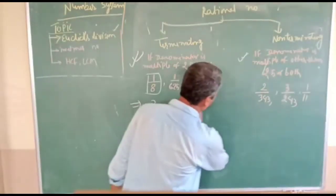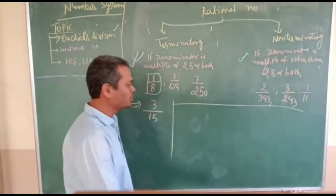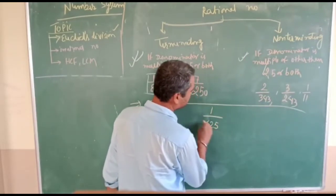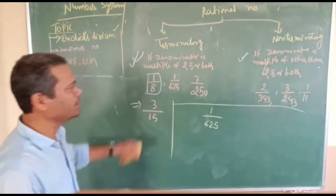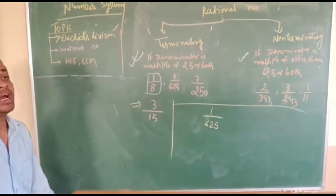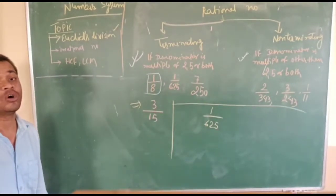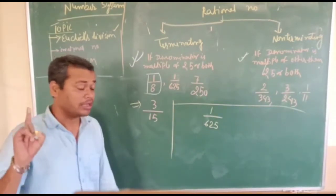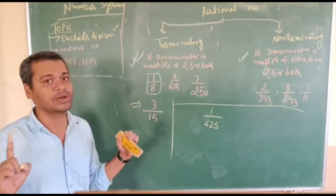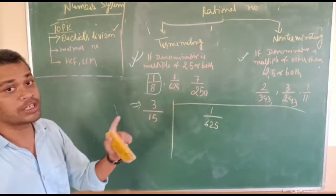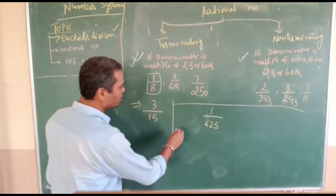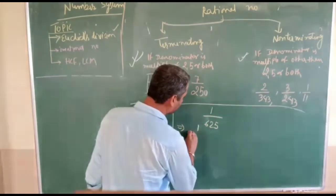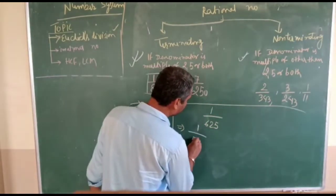The next kind of question they may ask is like this: for 1/625 we know it is terminating, but the question will be — the decimal will come after how many digits? This kind of question is very very important, and it has become more important now because they ask 2 marks questions. So this kind of question has become very important. As I told you, the method is very simple — 1/625 = 1/5⁴.